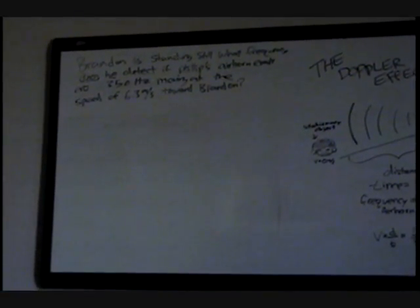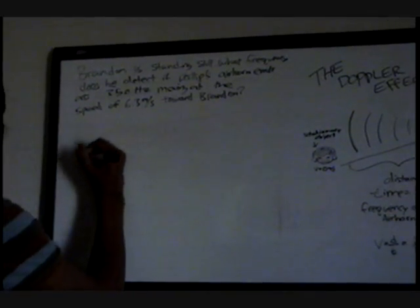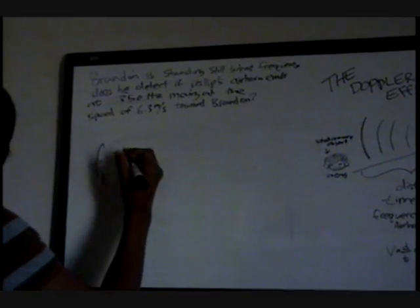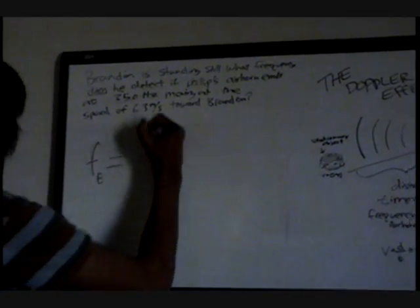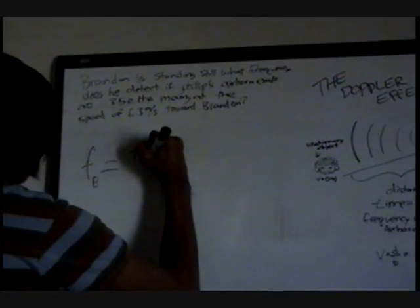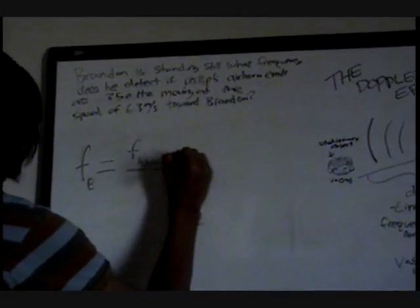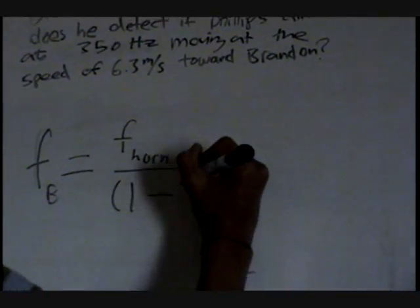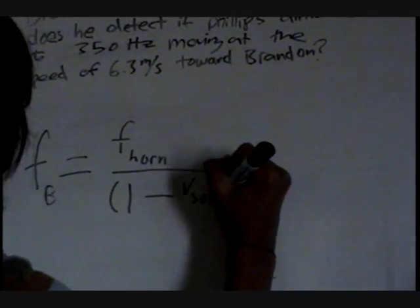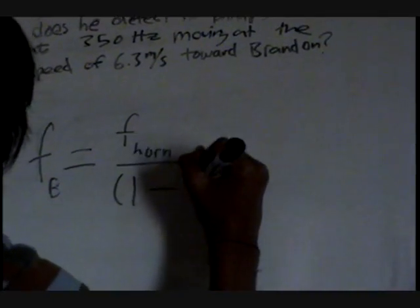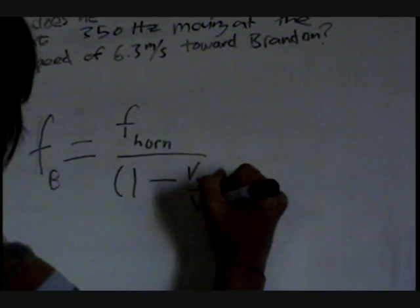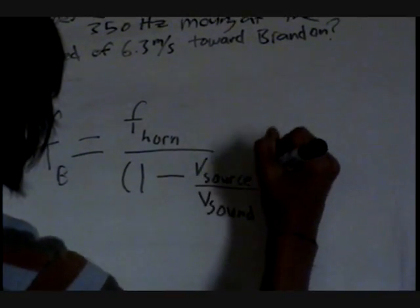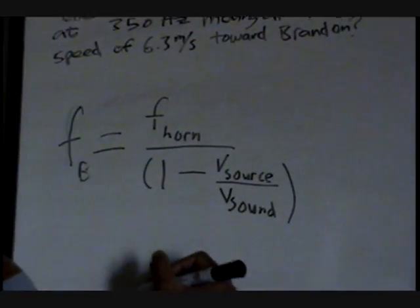We can find this by taking the frequency here. We'll call it f of b for Brandon. And that equals the frequency of the horn all over 1 minus the velocity of the source, which is Philip, which we take that over the velocity of the sound. Okay, and to find this, we plug it in.